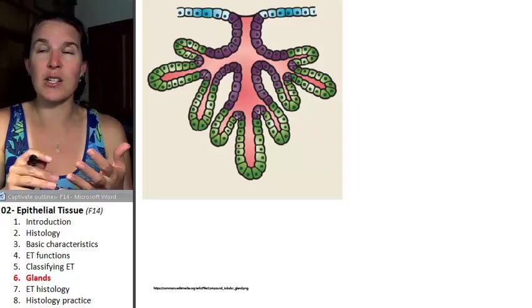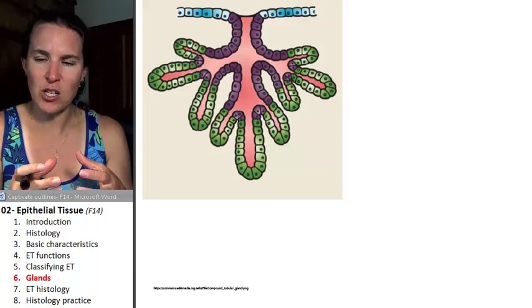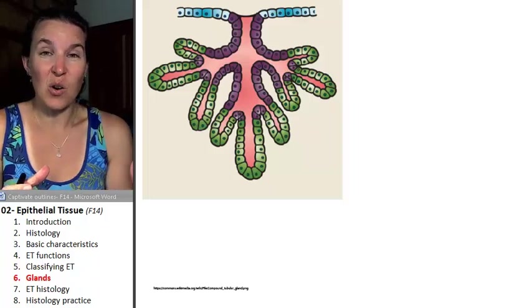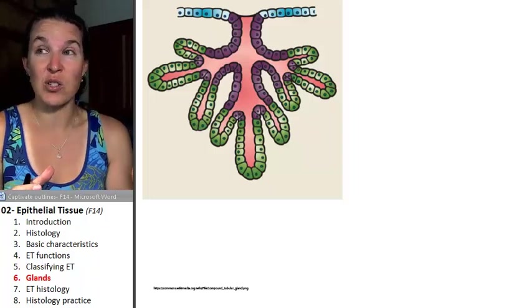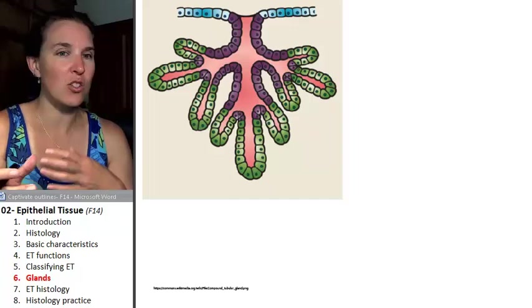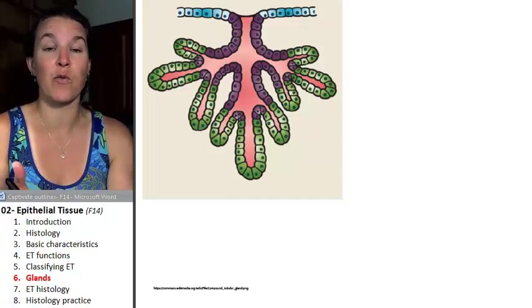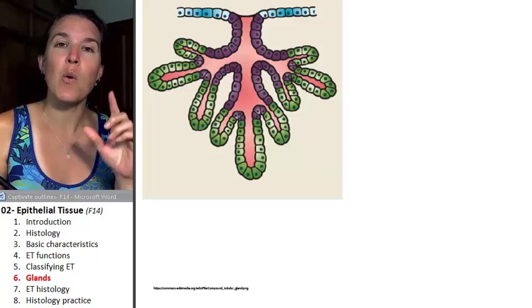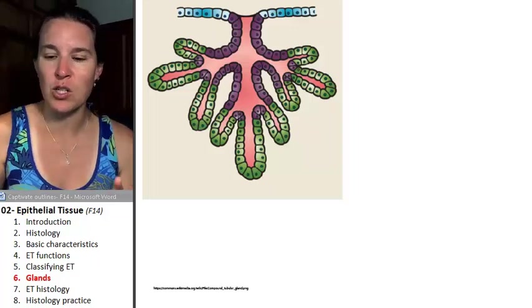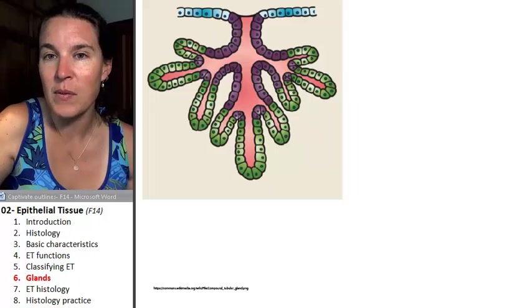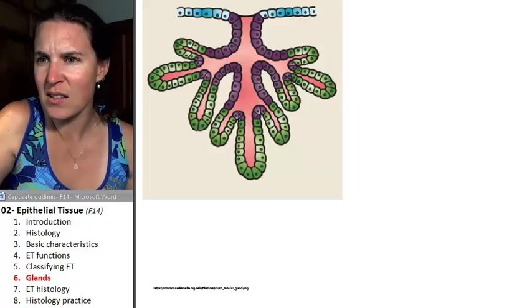It's a structure. It's not a tissue. It's an actual structure. Sometimes it's actually an organ, which means there's all sorts of different tissues interacting together to perform a common function. But we're talking about it with epithelial tissues because glands are lined with epithelium. And so you can see that here.